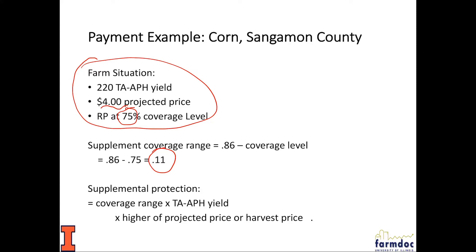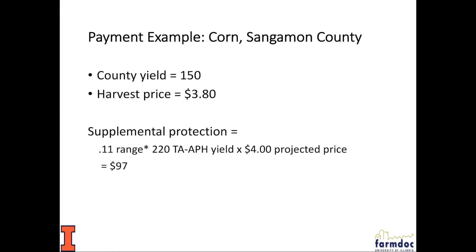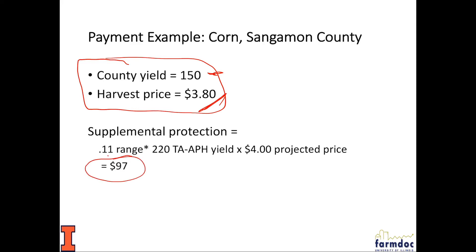Our supplemental protection, or the maximum payment under SCO, will be the coverage range (0.11) times the trend adjusted APH yield of 220. This supplemental coverage will vary from farm to farm depending on the trend adjusted APH yield and the higher of projected or harvest price. I'm going to give a situation in which the harvest price is $3.80, below the projected price, so the projected price is used in the supplemental protection calculation. With a 150 bushel county yield, our supplemental protection comes to $97 per acre — that's the maximum payment SCO will make in this case.